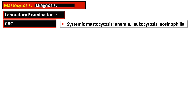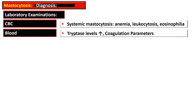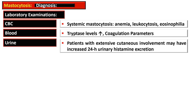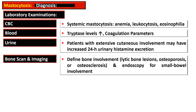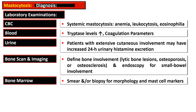To reach a definite diagnosis, various laboratory examinations can be performed. Complete blood count may show anemia, leukocytosis, and eosinophilia. In systemic mastocytosis, there is increased tryptase level and disturbed coagulation parameters. Increased 24-hour urine histamine excretion can be seen. Bone scan and imaging are important to define bone involvement such as lytic lesions, osteoporosis, and osteosclerosis. Endoscopy can be used to assess gastrointestinal tract involvement. Bone marrow smear and biopsy are used for morphology and mast cell markers.